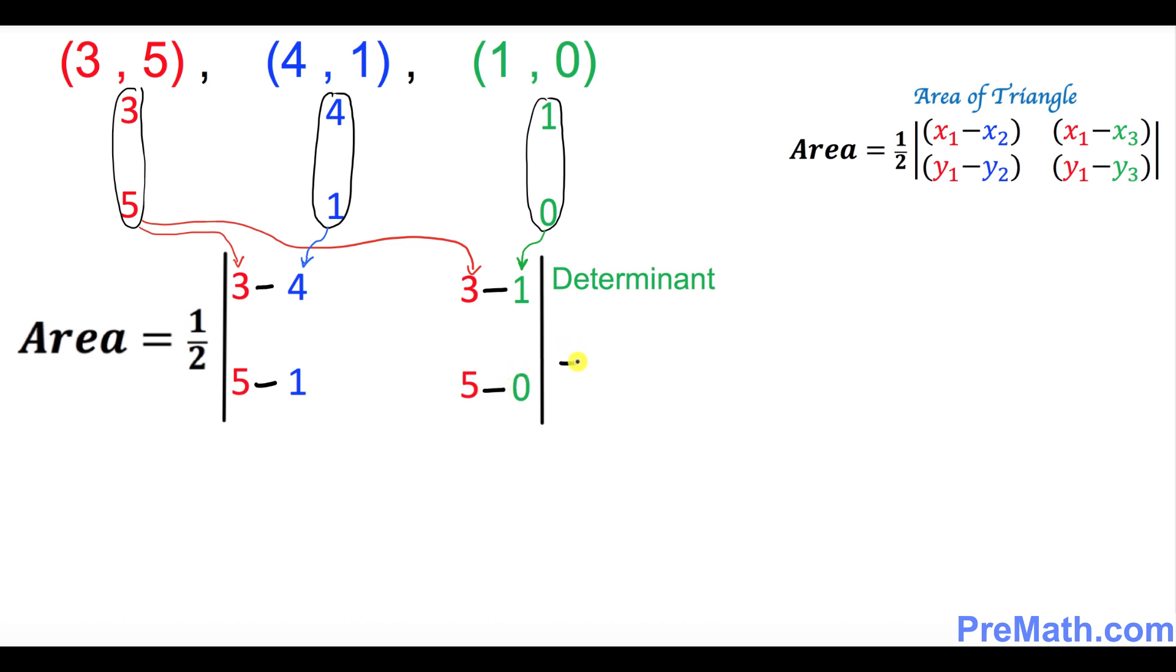Let's go ahead and now simplify this one. So over here the area is going to be 1 over 2 times, let's simplify this determinant. 3 minus 4 makes negative 1, and then 3 take away 1 is 2. That's going to make 4 and that makes 5.